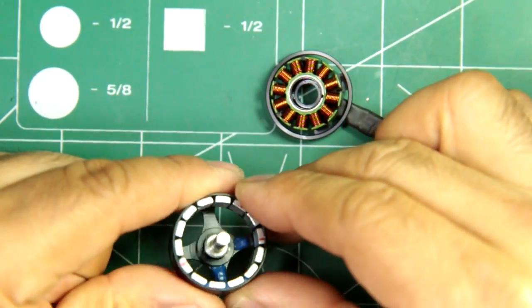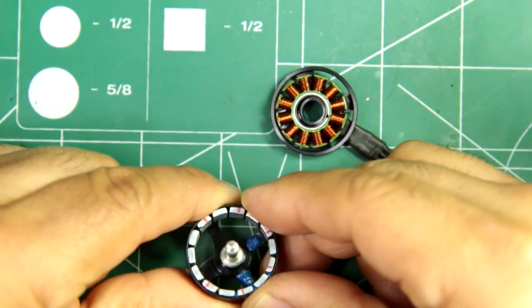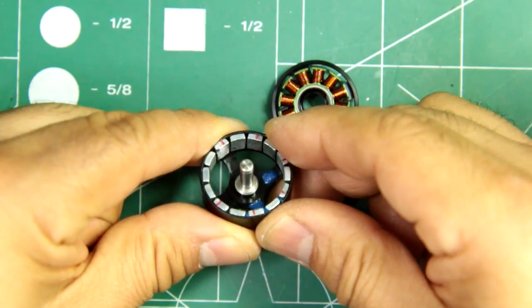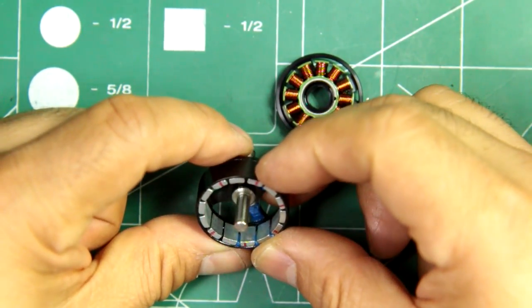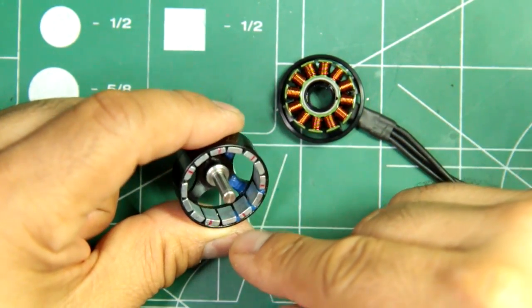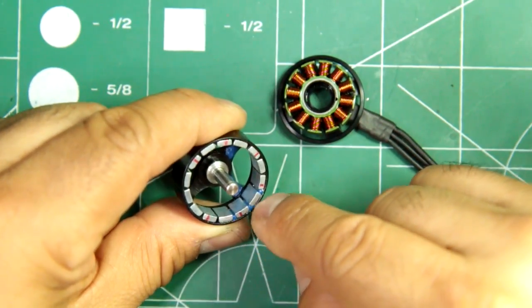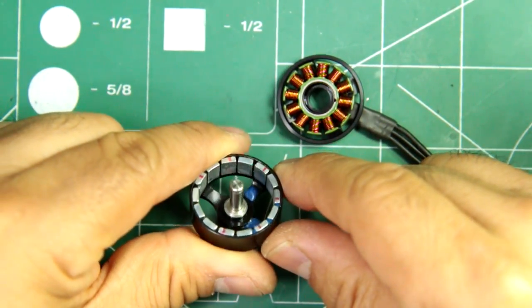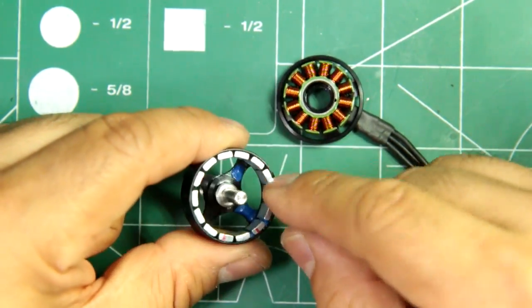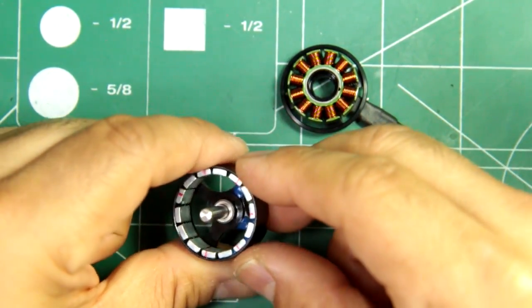Another thing if you notice, the magnets, they are curved and so the gap between them is pretty small. So that's pretty good, they went to arc magnets.